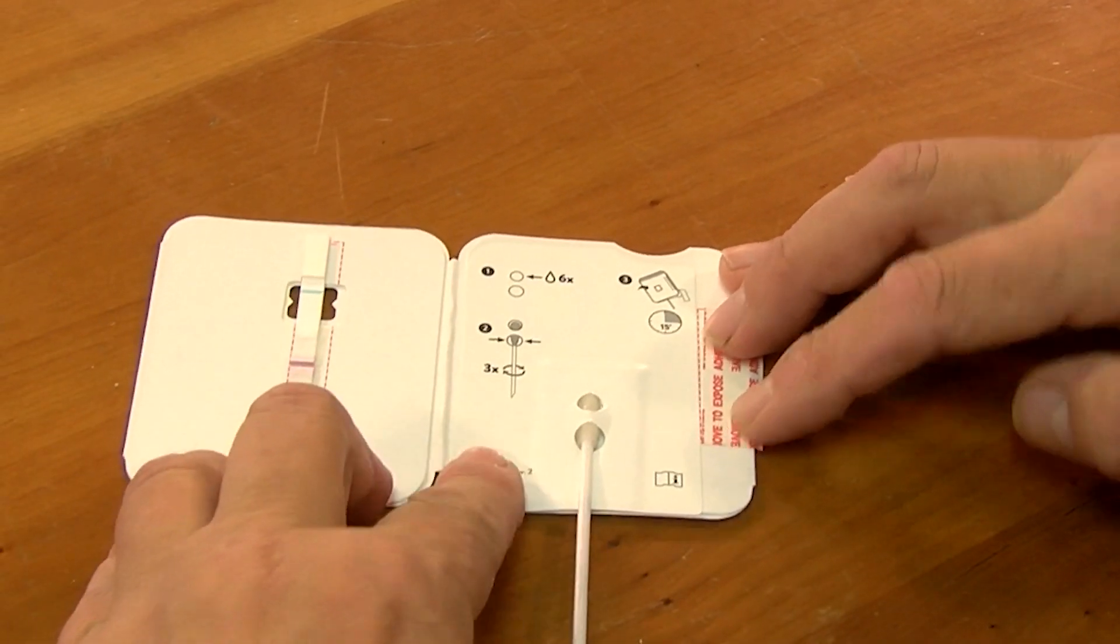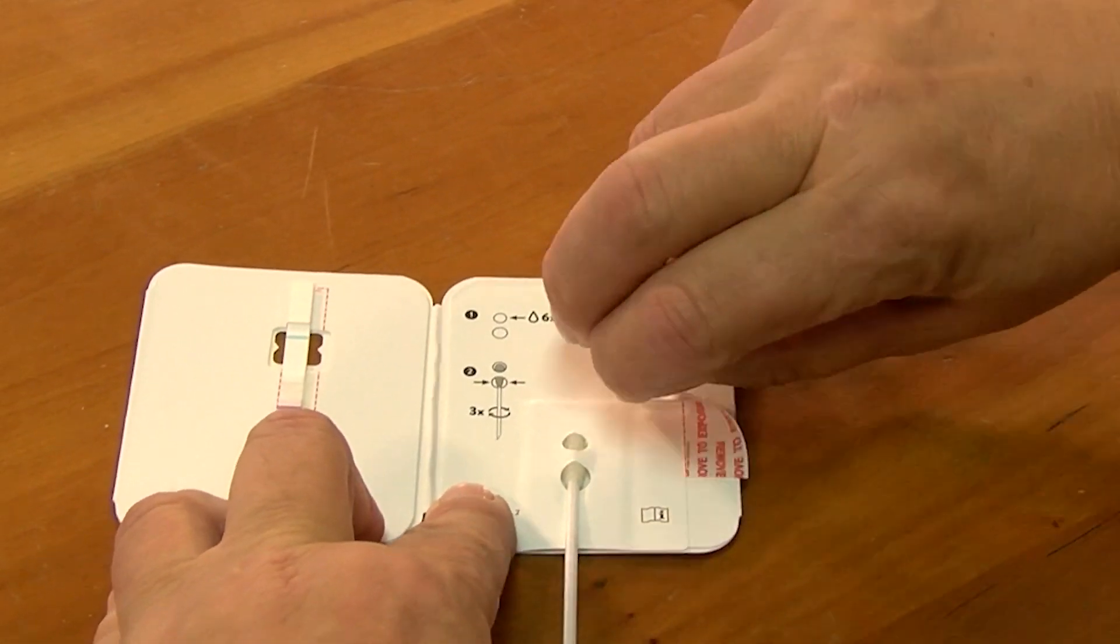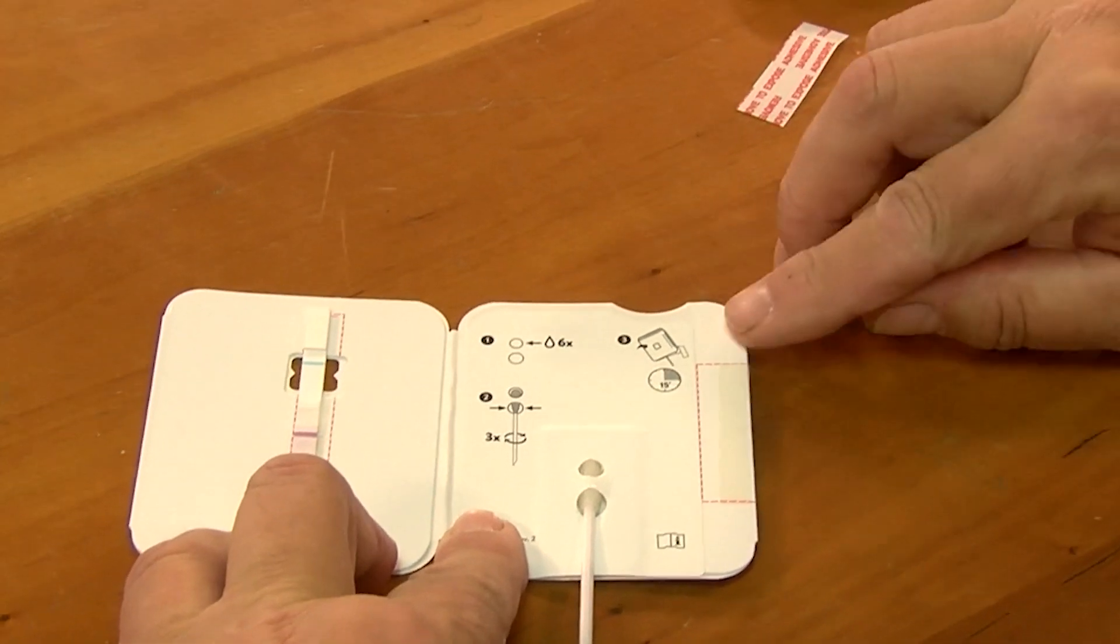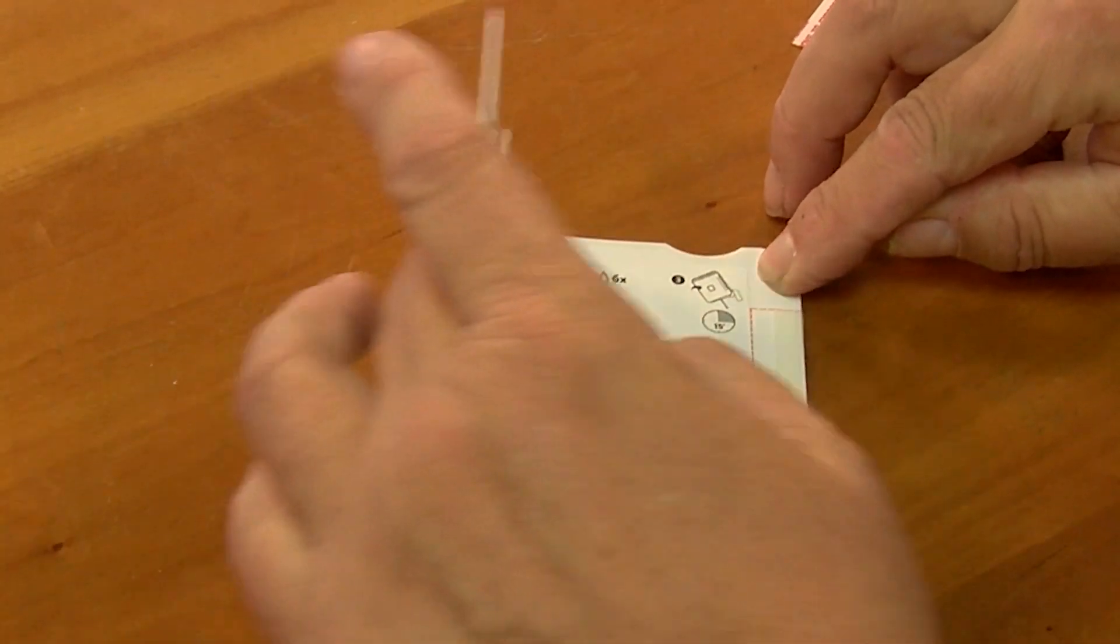Peel the sticky line off the right side, being careful not to touch the card. Close the left side of the card over the swab. Press firmly on the right edge of the card to stick it together.